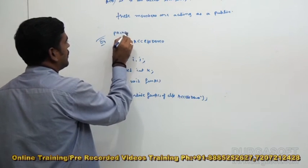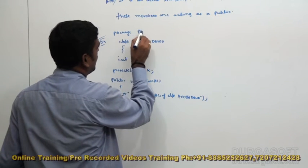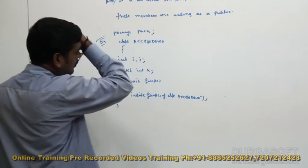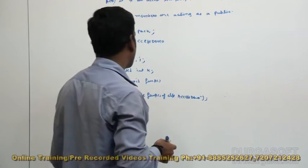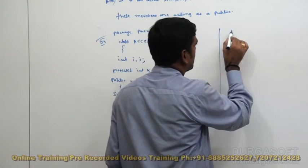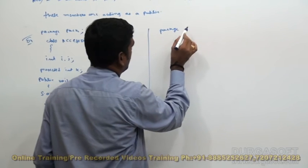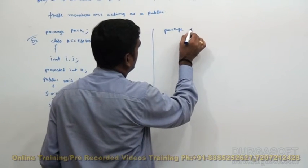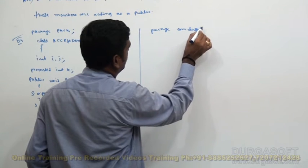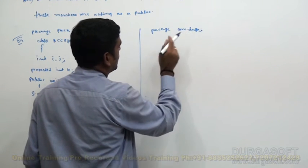Assume that this class is available in a package. How to define the package? By using the package keyword: package pack1. Now, if we want to access this protected member as public, we can do it like this — package com.durga, where com is the main package and durga is the sub package.